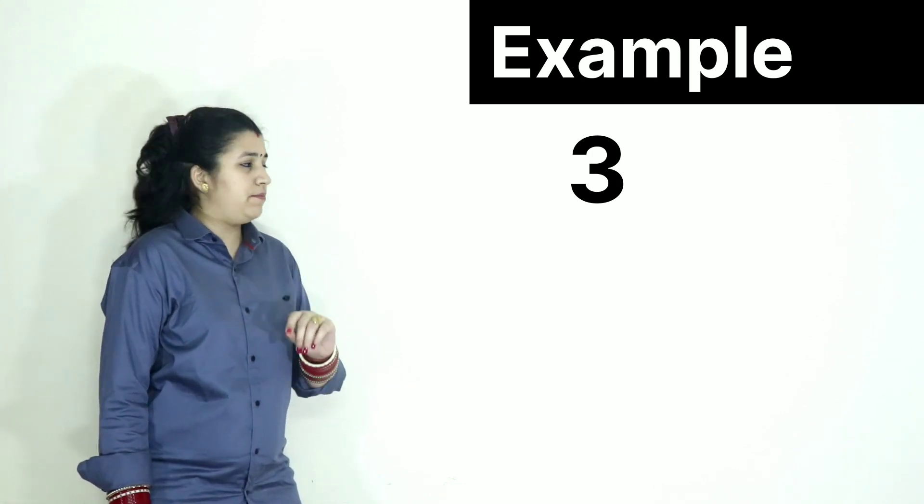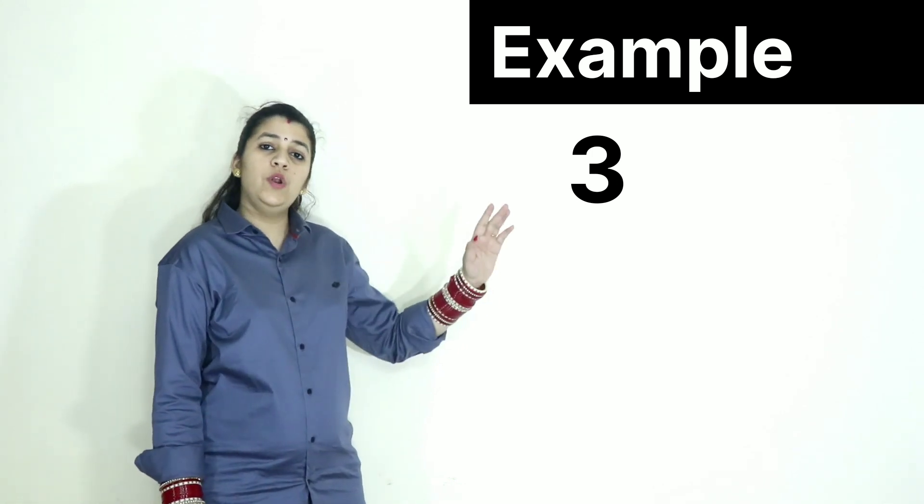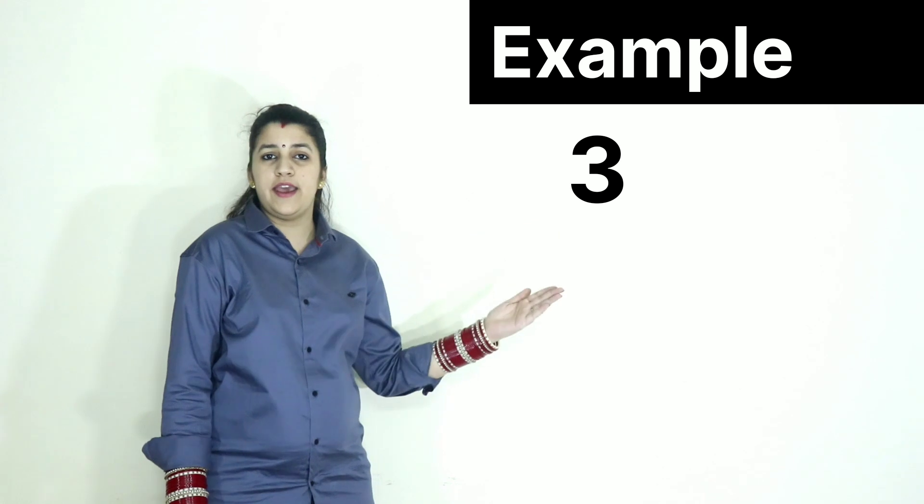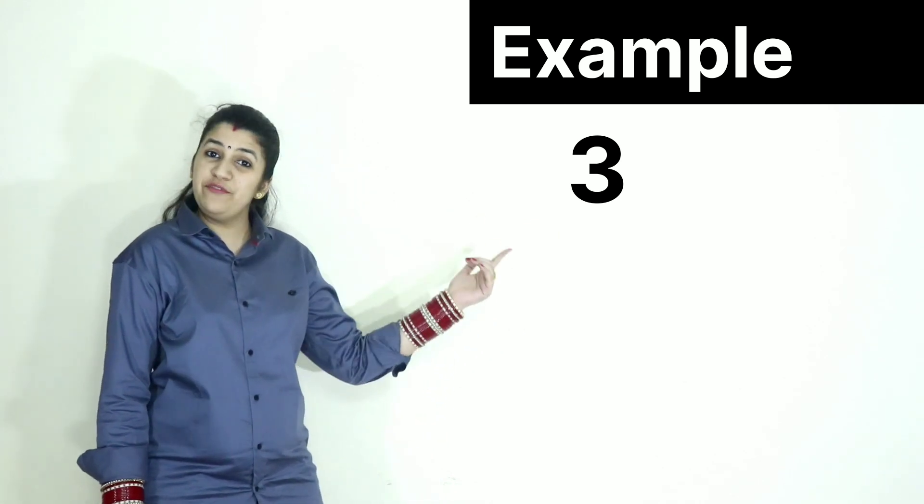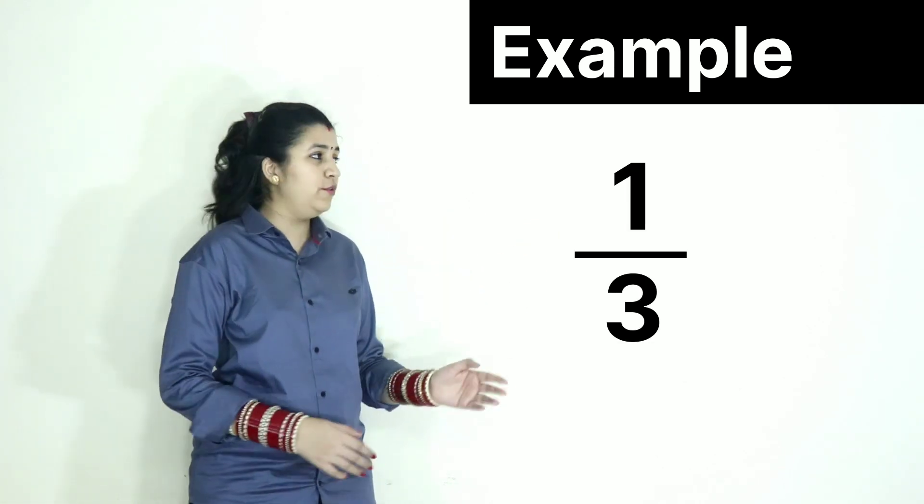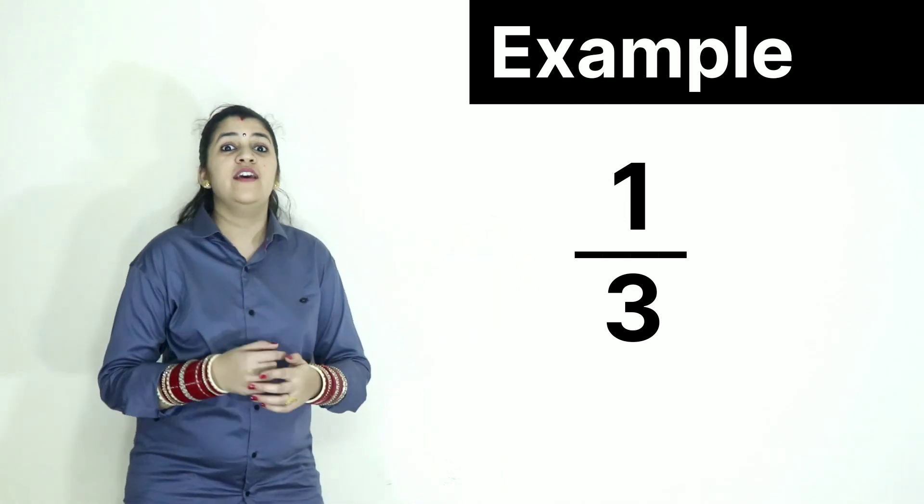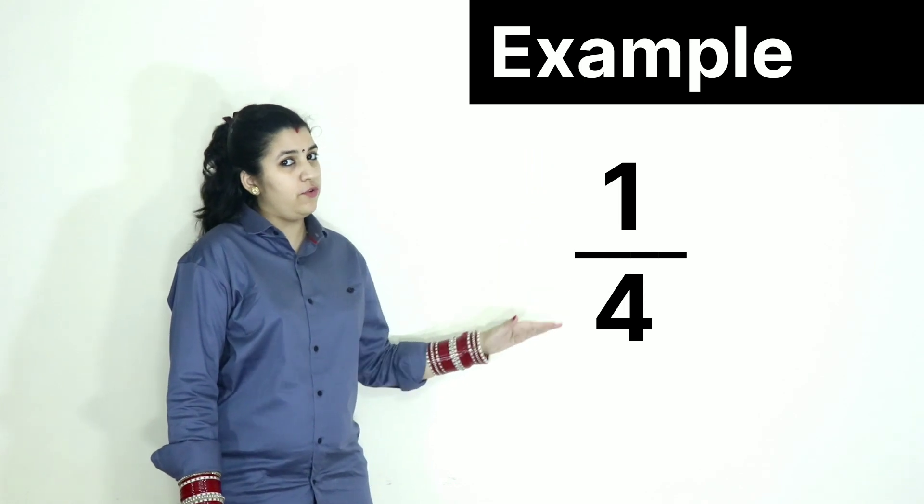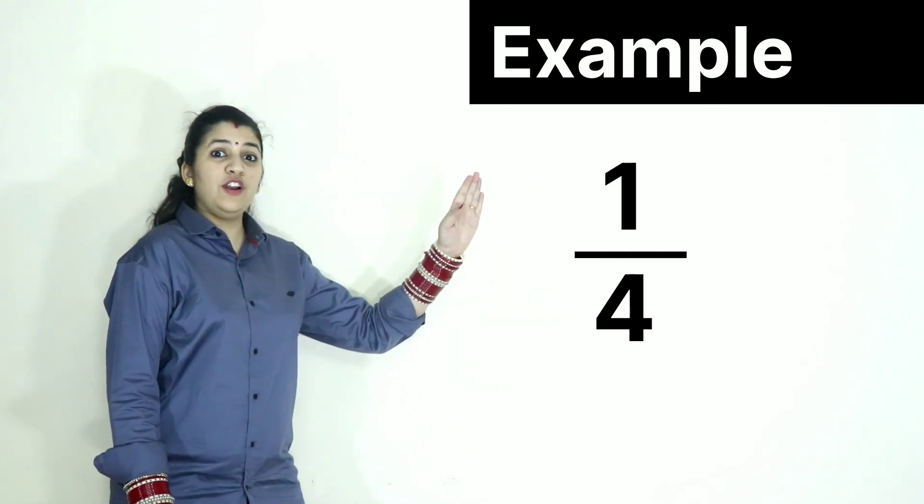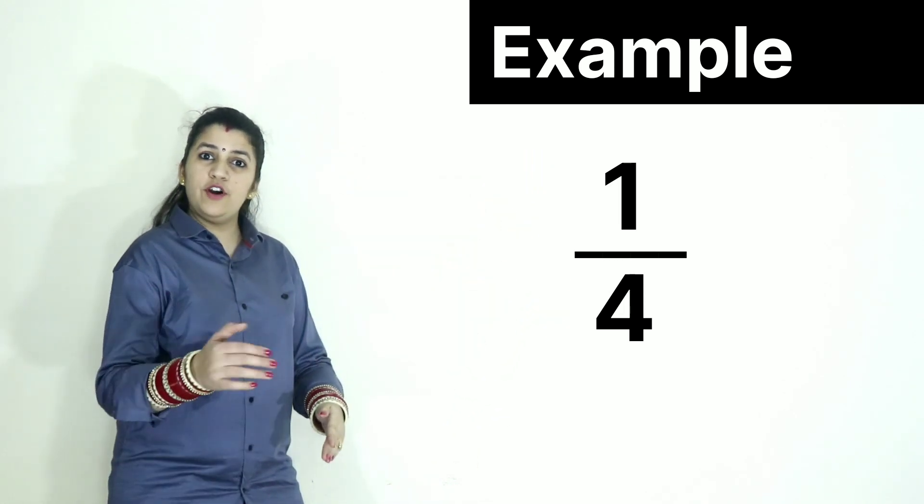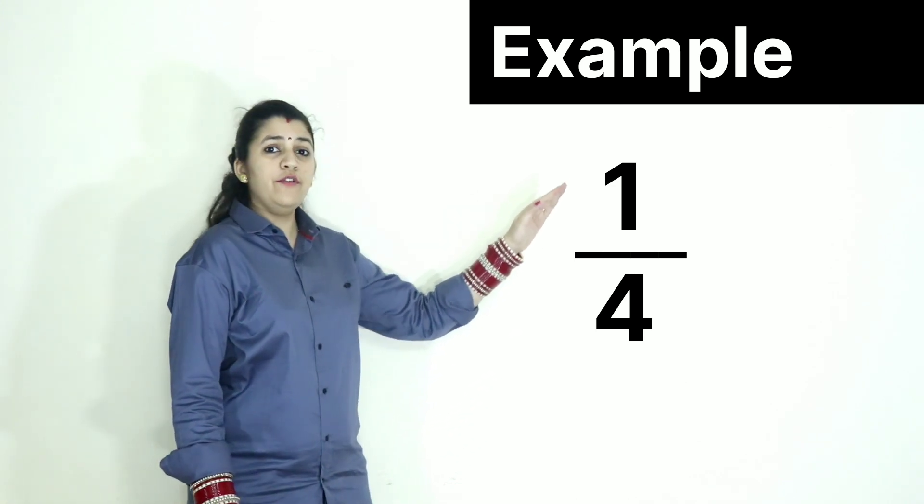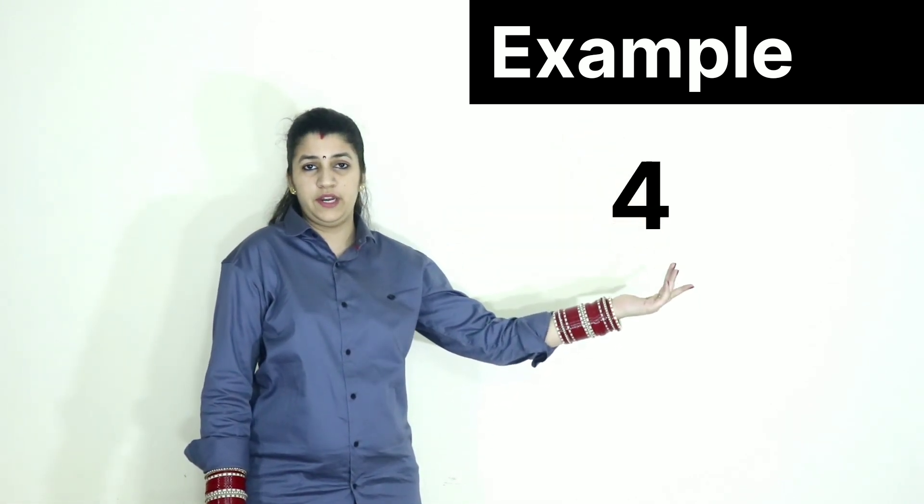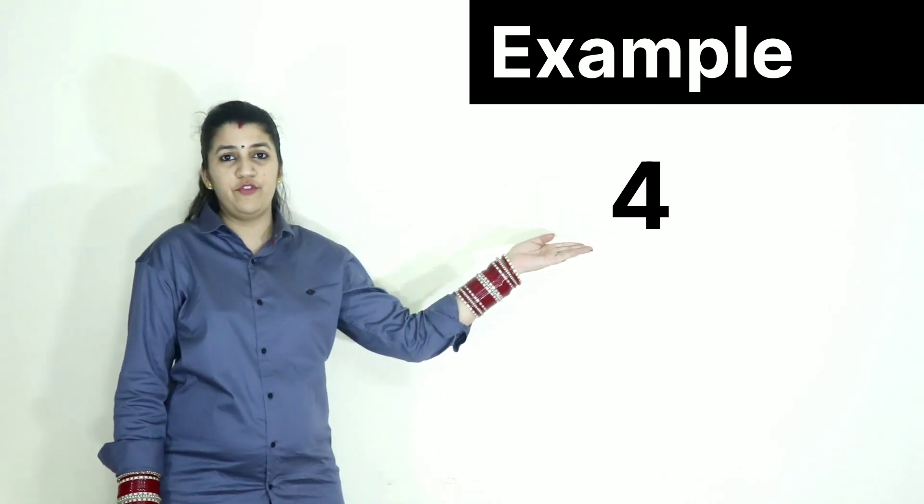Let us take a simple example: the number 3. If I ask you to take the reciprocal of 3, what do you have to do? 1 upon 3. In the same way, if I ask you for the reciprocal of 1 upon 4, what will you do? 4 will come in the numerator and 1 will go to the denominator. That is the number 4.